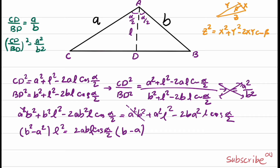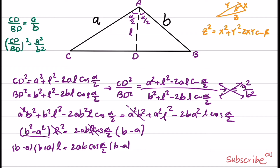We can simplify the A squared·B squared terms. On the left-hand side we have B squared minus A squared, and on the right-hand side we have 2AB·L·cosine(alpha/2) times (B minus A). Because L is not equal to zero, we can simplify L from both sides, giving (B minus A)(B plus A)·L equals 2AB·cosine(alpha/2)·(B minus A).